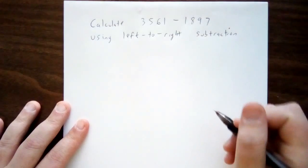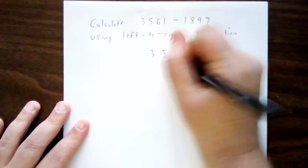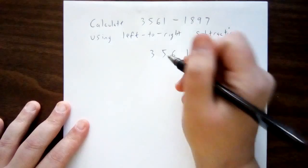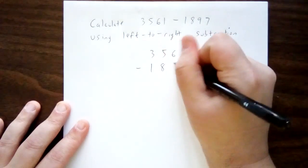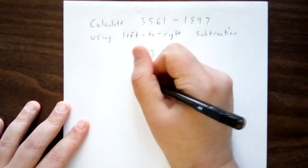Just like the standard subtraction algorithm, we begin by aligning our two numbers by place value, stacking ones on top of ones, hundreds on top of hundreds, thousands on top of thousands, and so on.